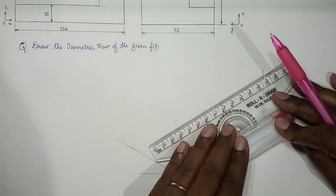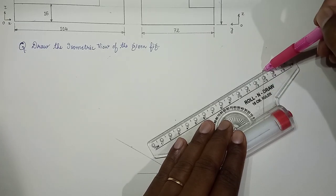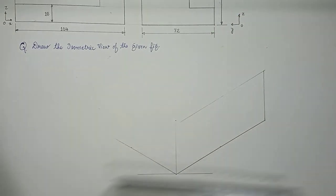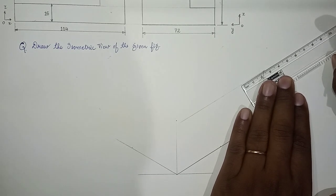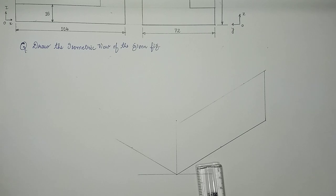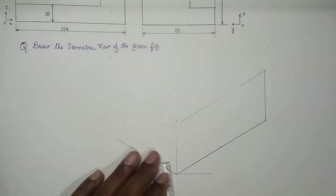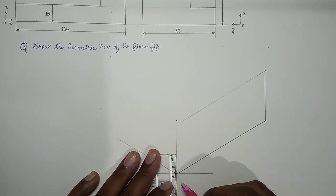This is x-axis, this is also called isometric axis. So we make construction lines for now, and along this line we mark 24.